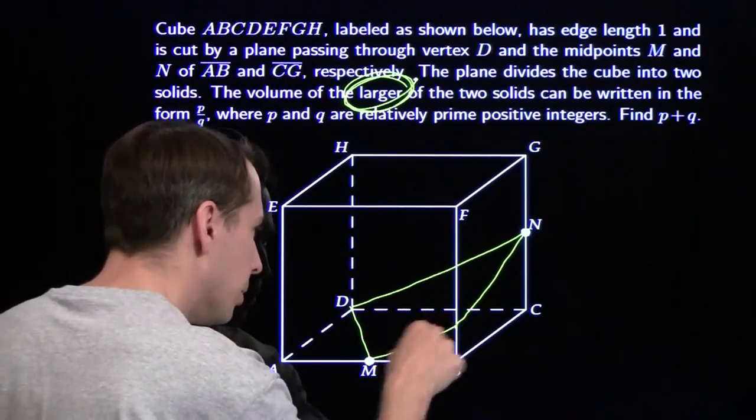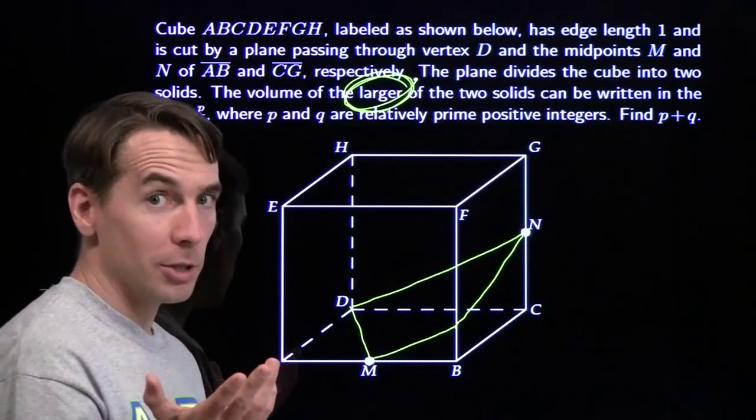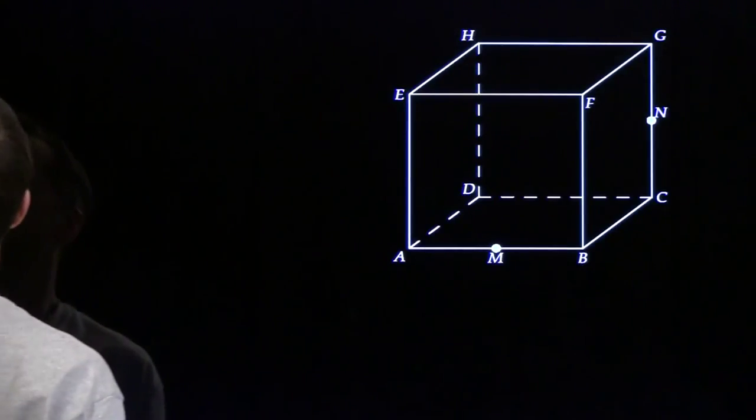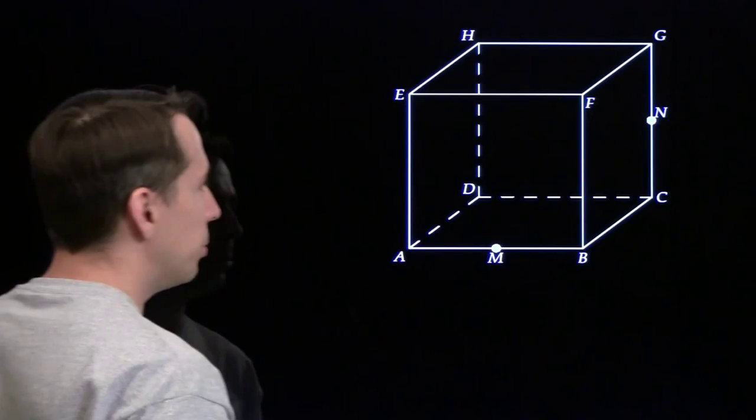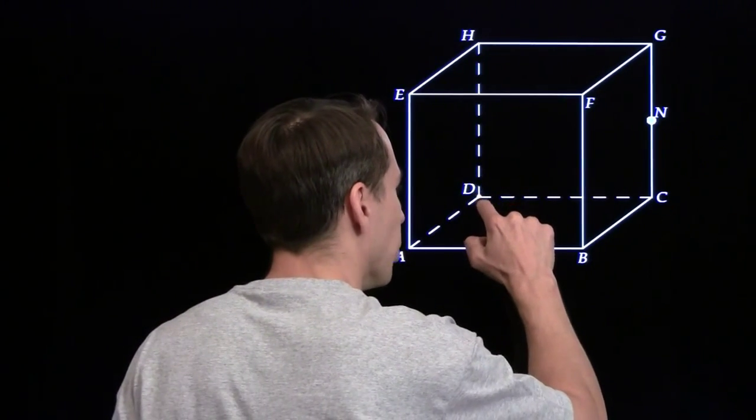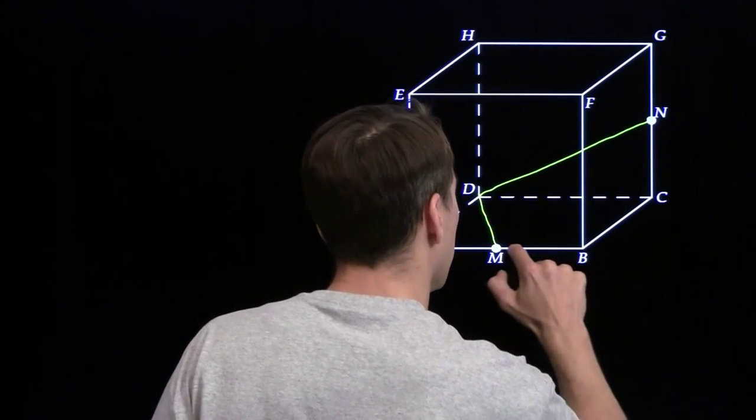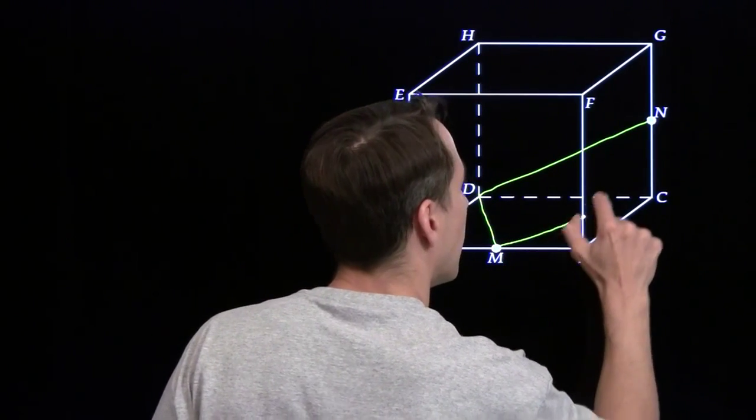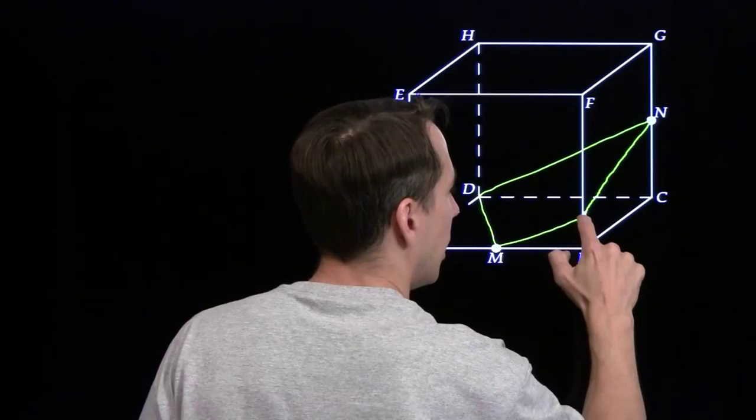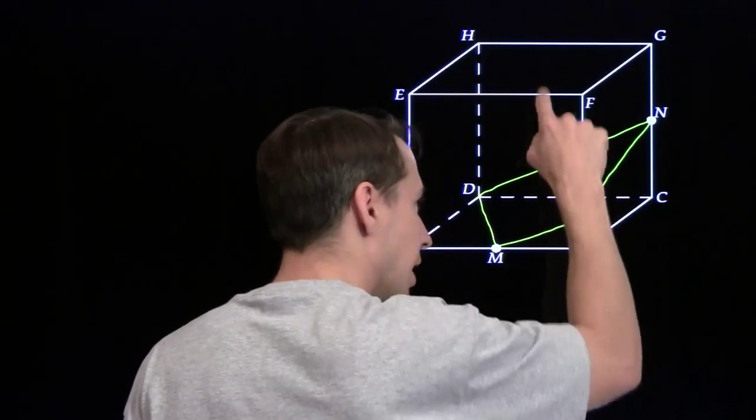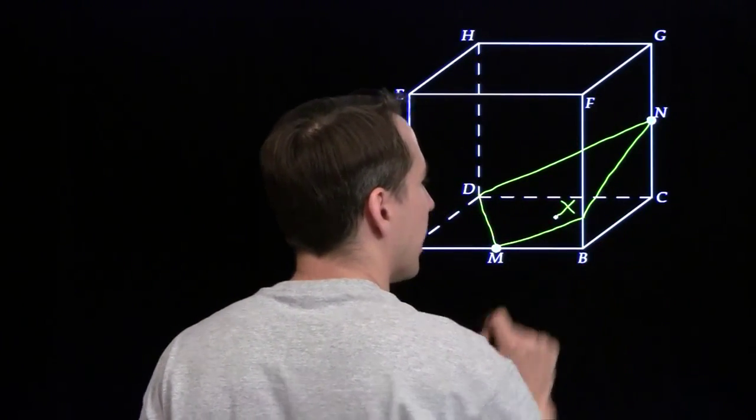Alright, so we have a plane, we're going to find the volume of that frustum. First we have to make sure it's a frustum. And to do that, we're going to have to go hunting for the big pyramid. That means I need more space. So, I'm going to draw the plane in here again, and I'm going to say this plane hits edge BF at point X.